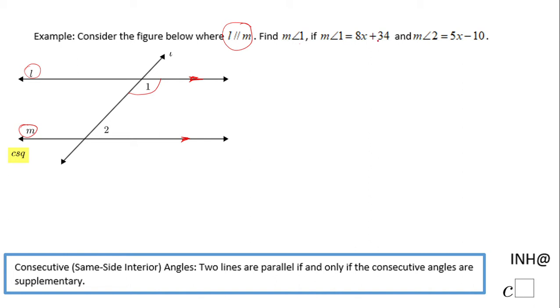If the measure of angle 1 is 8x plus 24, and the measure of angle 2, which is this guy here, and you notice I mark this angle different, is 5x minus 10. These two angles are not congruent, and you can notice one is big, one is small.